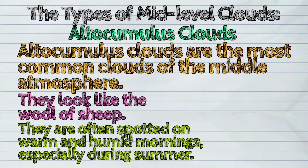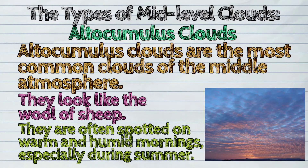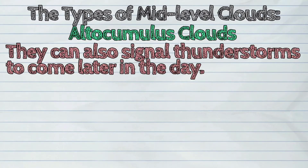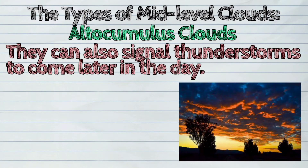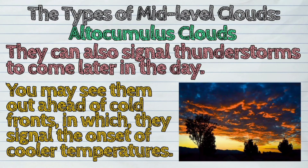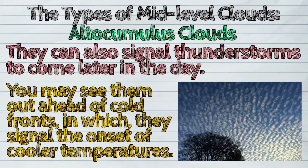Altocumulus are often spotted on warm and humid mornings, especially during summer. They can also signal thunderstorms to come later in the day. You may see them out ahead of cold fronts, in which they signal the onset of cooler temperatures.